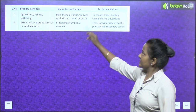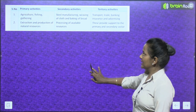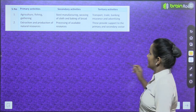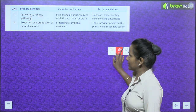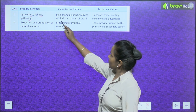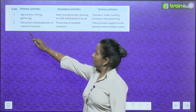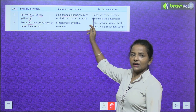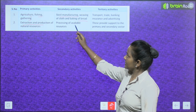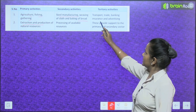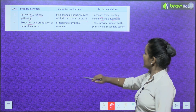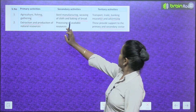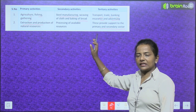There are three types of economic activities. Primary activities include agriculture, fishing, and gathering — essentially extraction and production of natural resources. Secondary activities involve processing, such as steel manufacturing, weaving of cloth, and baking of bread. Tertiary activities include transport, trade, banking, insurance, and advertising — these provide support to the primary and secondary sectors.